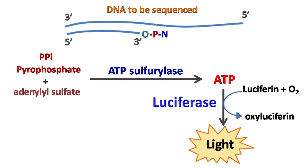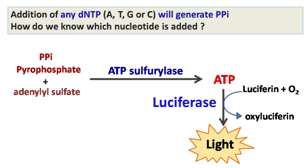Along with ATP as an energy source, the luciferase also uses oxygen and luciferin as a substrate. Now here comes an interesting question: addition of any dNTP will generate pyrophosphate. So the question is, how do we detect which nucleotide is added?